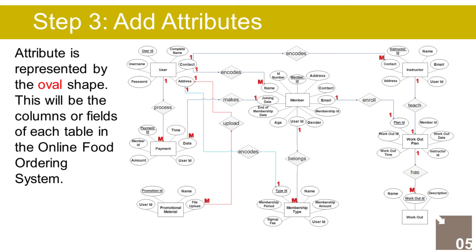The Customer entity has the following attributes: ID (Primary Key, represented with underline), first name, last name, middle name, email, phone number, landline, profile image, username, password, and account status.